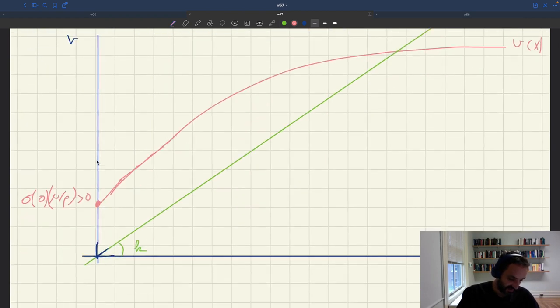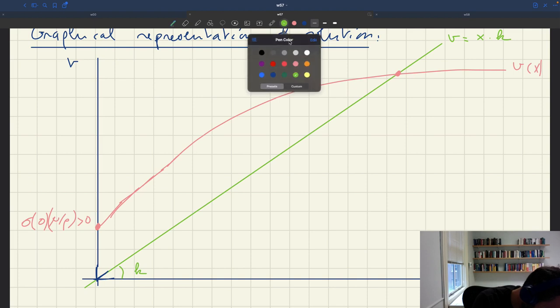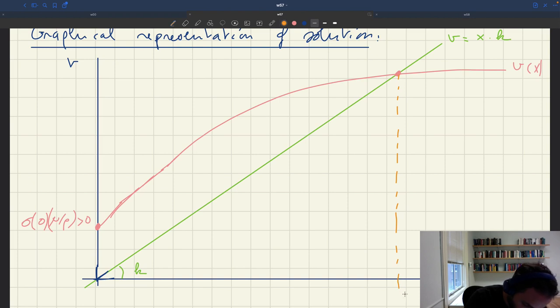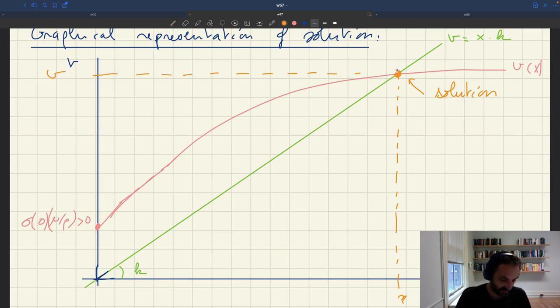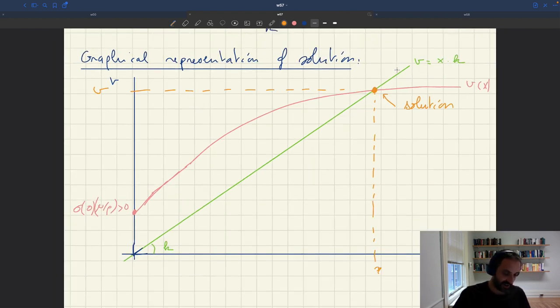In a world like this, here we would have our solution. Here we would have the tightness X that solves the model, and here you would have the visits V that solves the model. Then you could study the model in different ways. This would be our graphical representation.